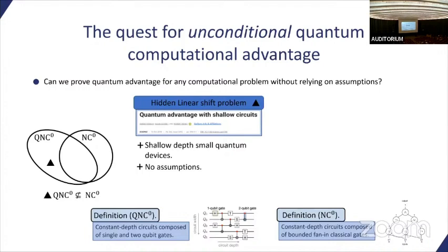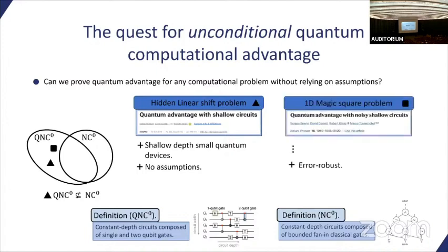It's very interesting because first of all, it's NISQ-era, shallow depth, and relies on no assumption, no computational assumption. Furthermore, it was even shown to be noise robust, meaning we can assume local stochastic noise and the advantage still survives. With a different problem, but it's still possible to separate these two classes. The main critique we could do here is that NC0 is rather a weak computational class.